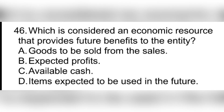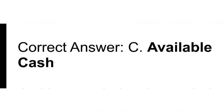Question 46. Which is considered an economic resource that provides future benefits to the entity? A. Goods to be sold from the sales. B. Expected profits. C. Available cash. D. Items expected to be used in the future. Correct answer: C. Available cash.